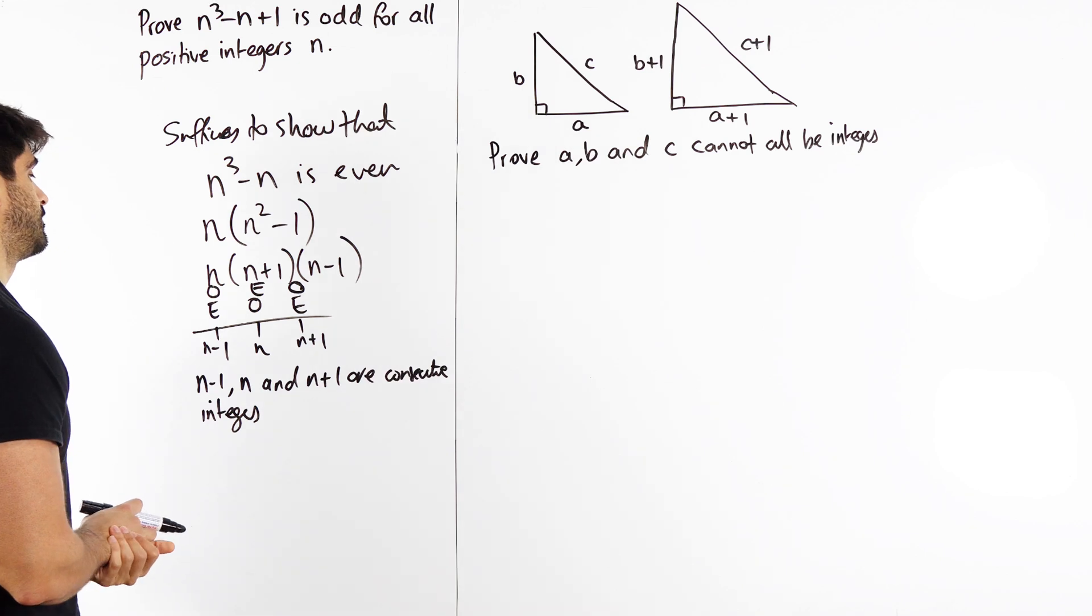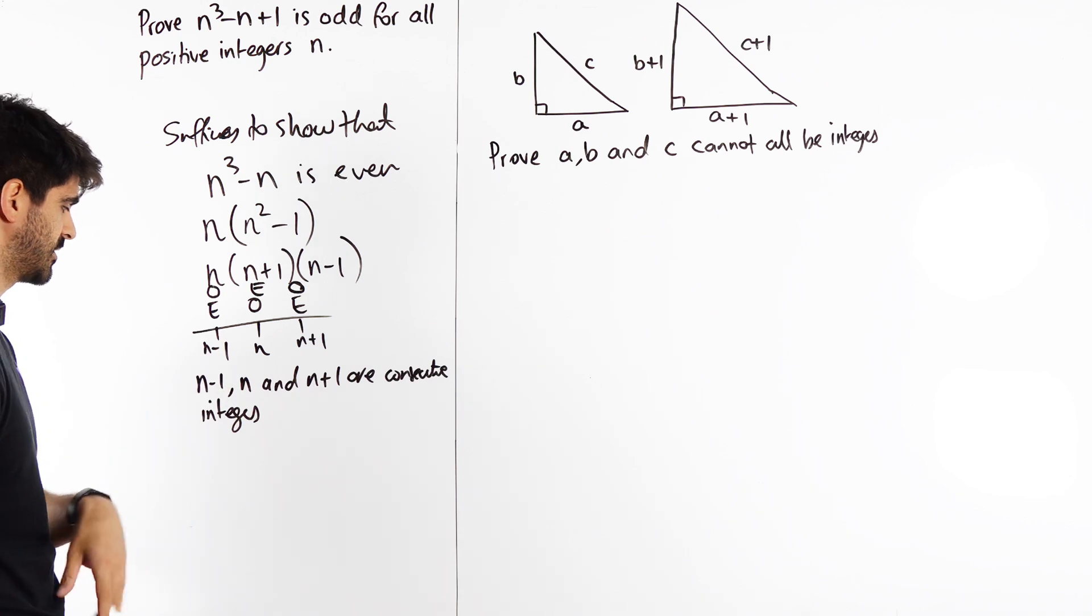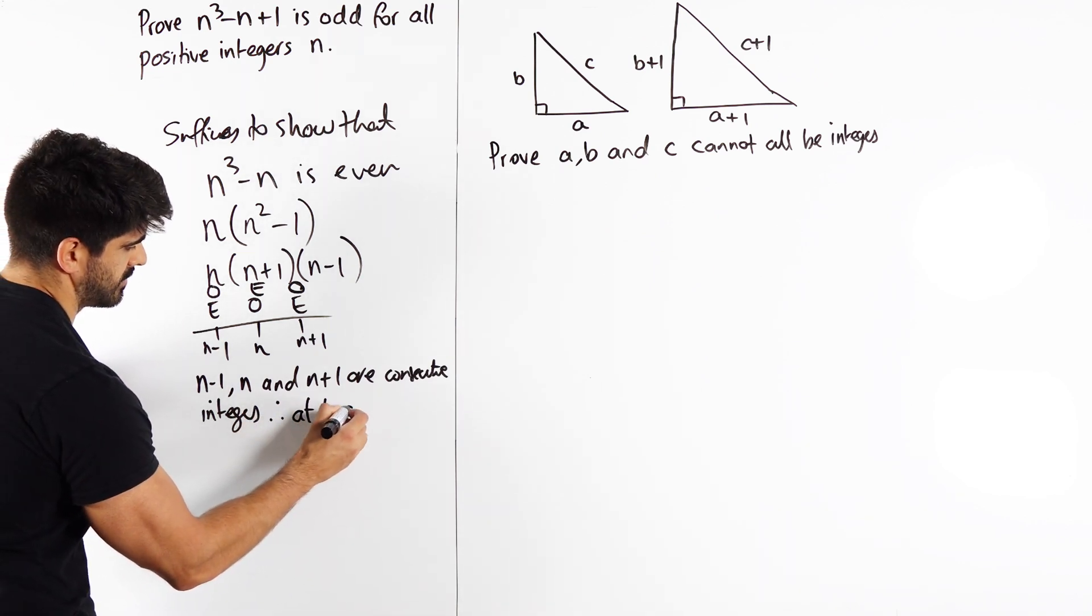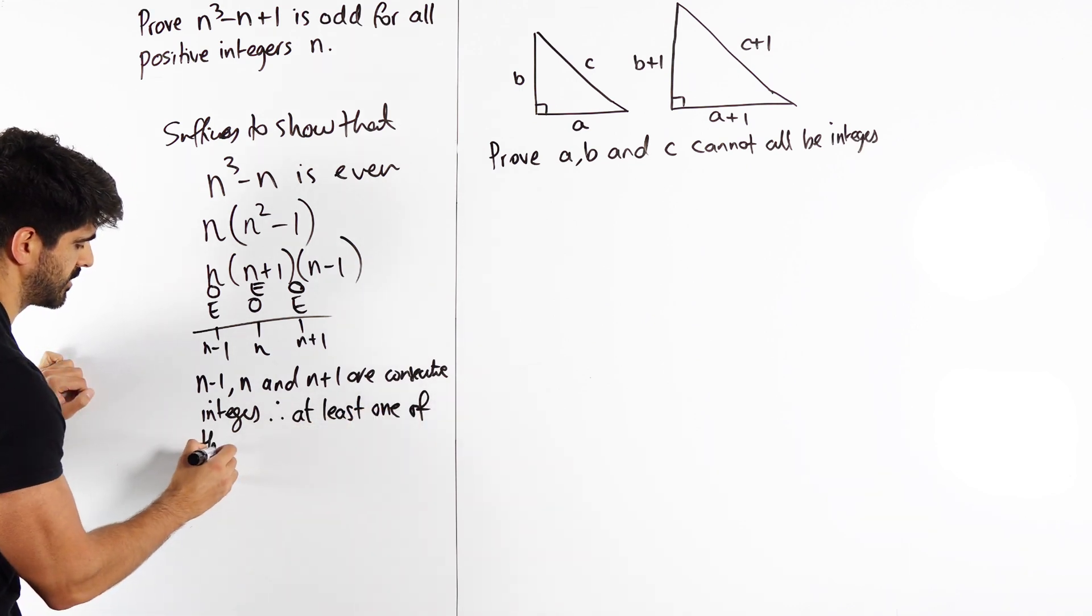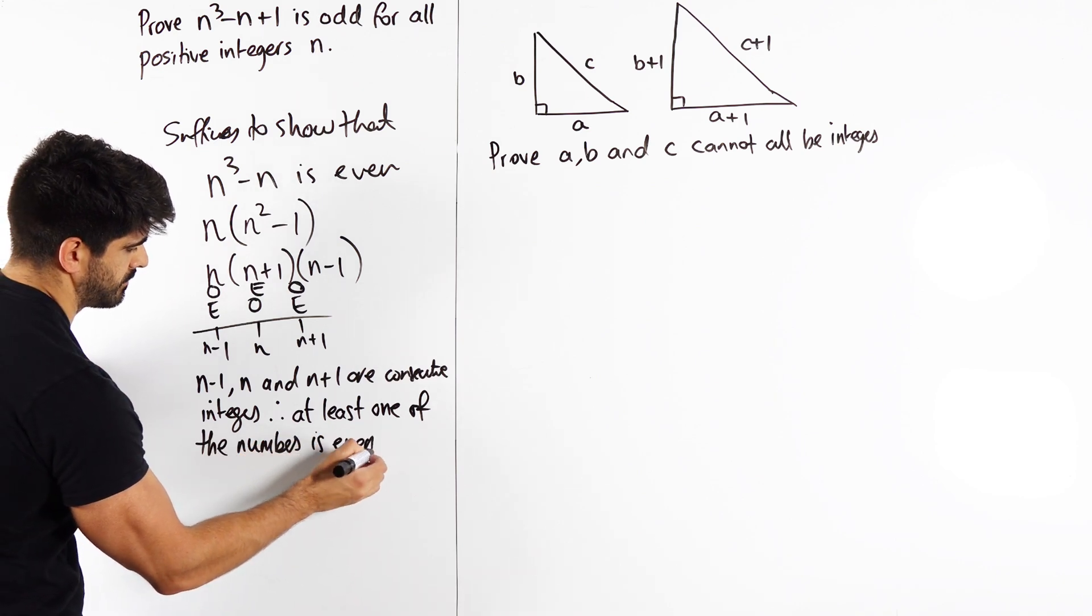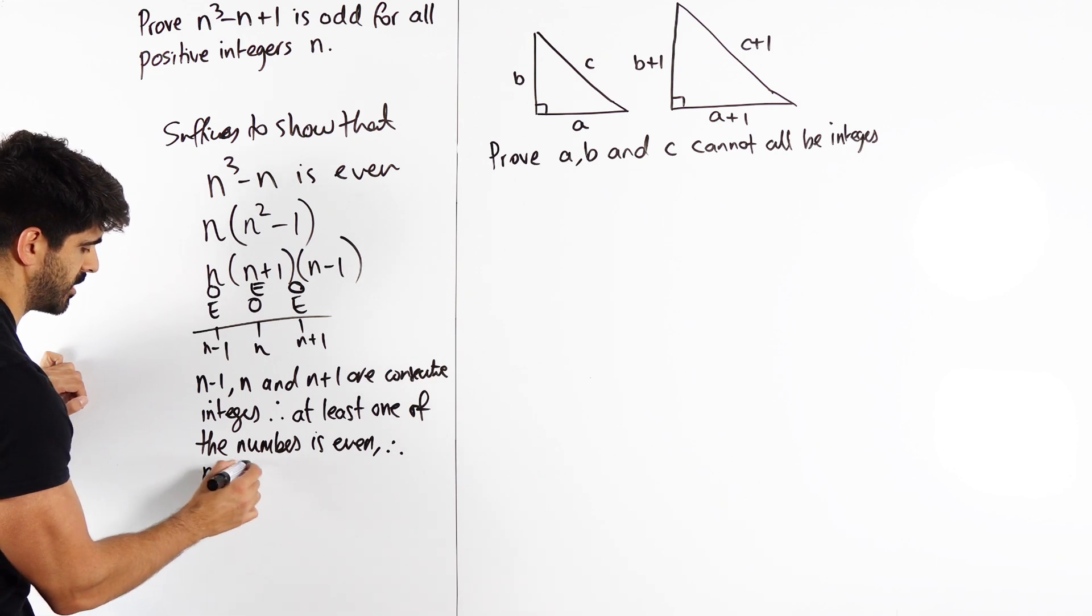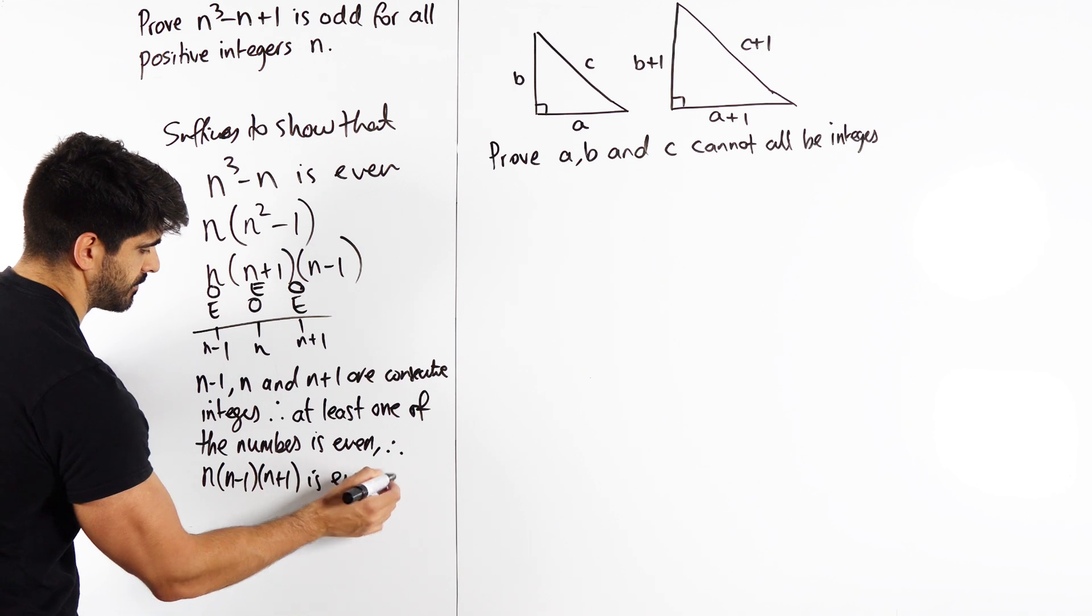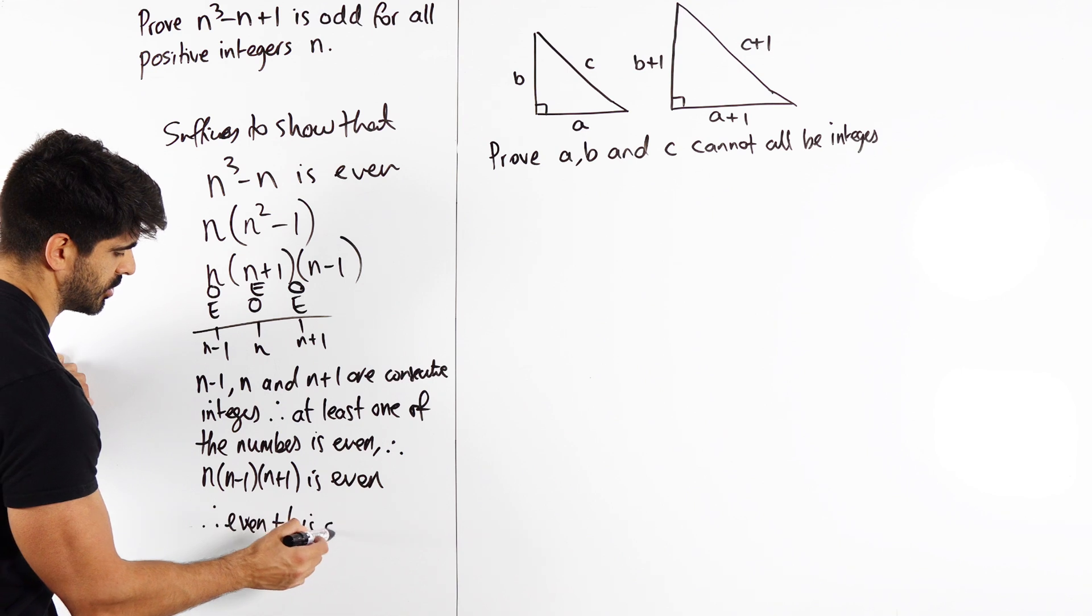So what are we saying here? Therefore, at least one of the numbers is even. Therefore, n(n - 1)(n + 1) is even. Therefore, even plus 1 is odd.